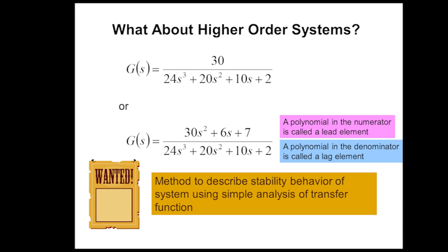So let's talk about higher-order systems. What do we do when we have something that is higher order than a second-order polynomial in the denominator? In this case, this is a third-order polynomial. What kind of tools do we have to analyze these systems? We're going to be talking about stability of the system. We learned that if we have any roots with real parts in the right-hand plane, or positive real roots, then we have an unstable system. We're also going to look at oscillation of these higher-order systems if they have complex roots.